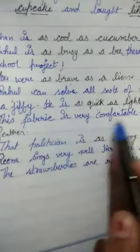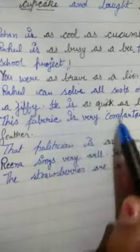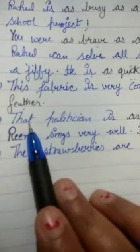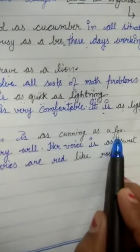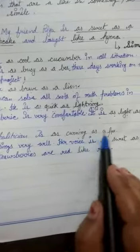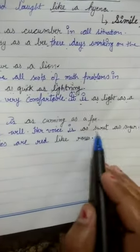This fabric is very comfortable. Using a simile: it is as light as a feather — feathers are very light, so the fabric feels that comfortable. The politician is as cunning as a fox — a fox is very clever, so we compare the politician to a fox.